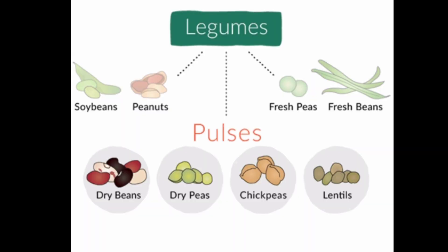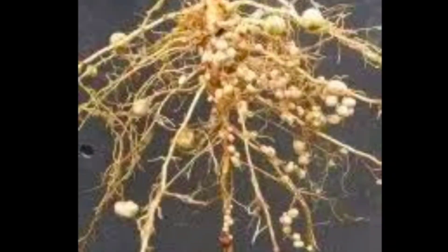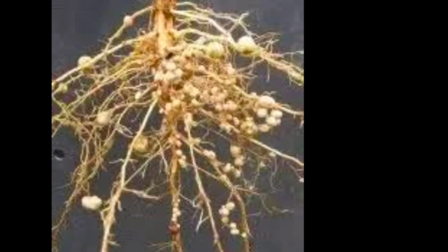Here are some legumes: soya bean, peanut, fresh beans, dry beans, chickpea, and lentils. Students, do you know that after harvesting the leguminous plants, the leftover roots and other plant parts are deliberately dumped in the farm soil to maintain the bacterial population.